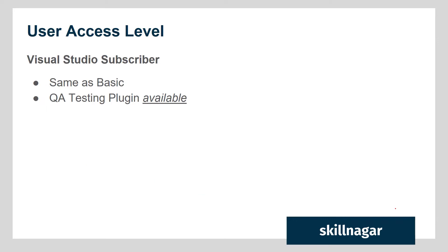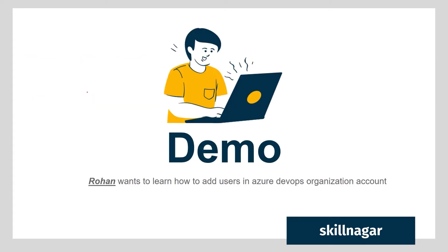Then we have the Visual Studio Subscriber account — this is someone paying for a Microsoft Visual Studio subscription. This user has the same privileges as the Basic user and also has the QA testing plugin available. Importantly, if your users are part of a Visual Studio subscription, they won't be counted in the first five free users, so you are not required to pay for them separately.